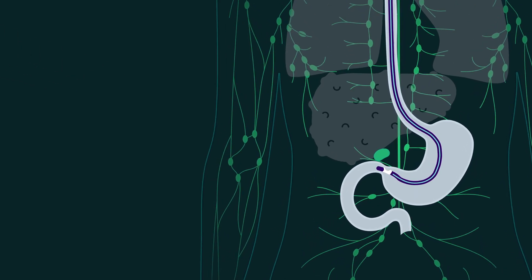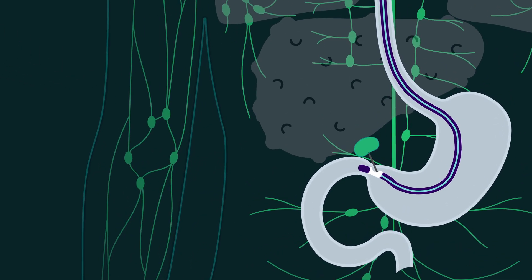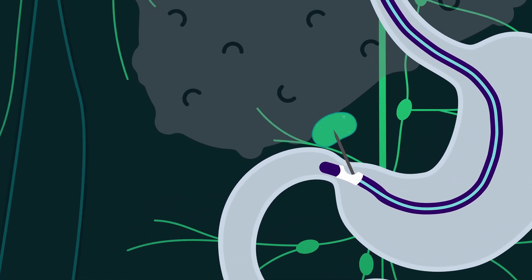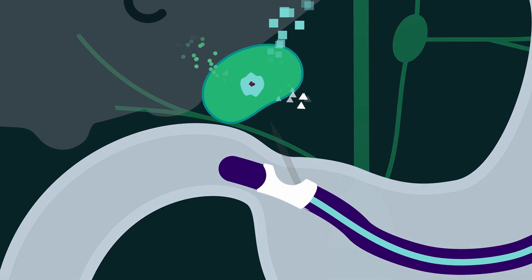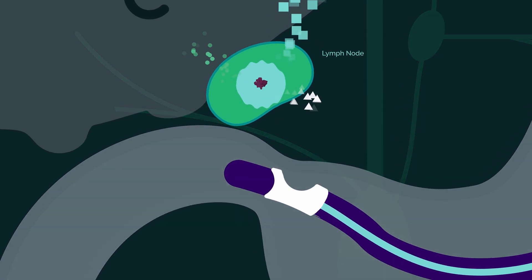An endoscopist uses an ultrasound on the tip of their endoscope to identify lymph nodes in the abdomen where the cells can be engrafted. When the engrafted cells are in the lymph nodes, the process of organogenesis begins.